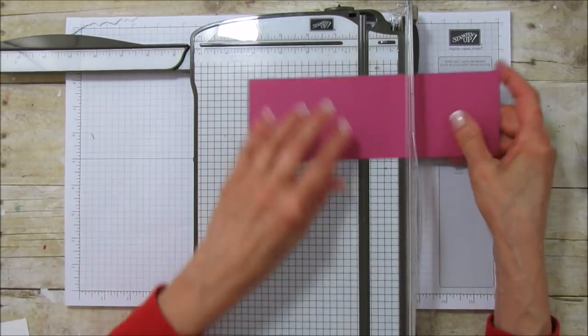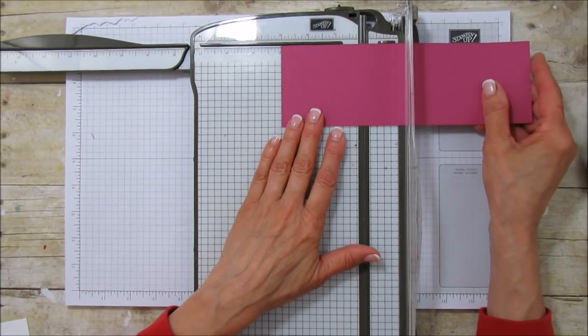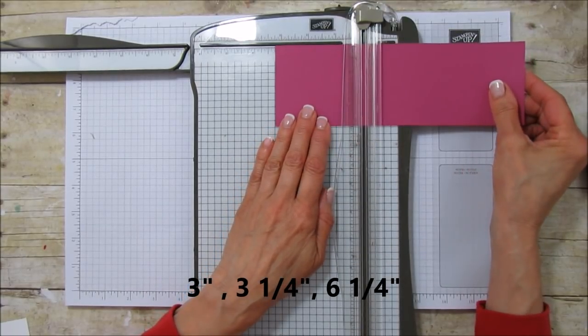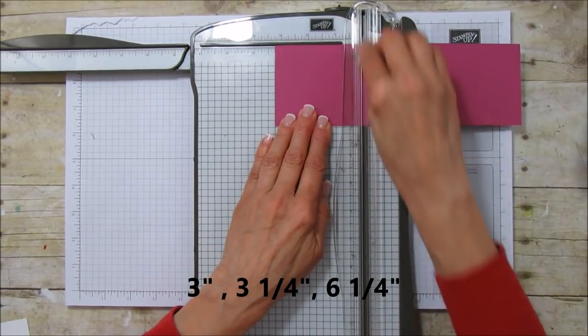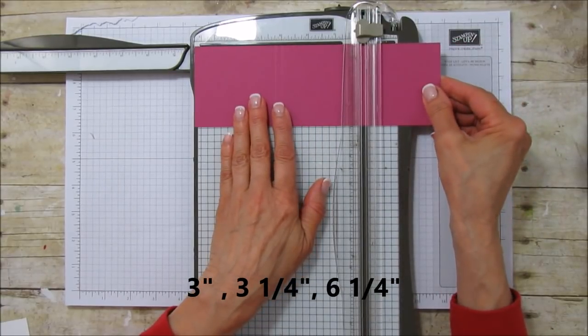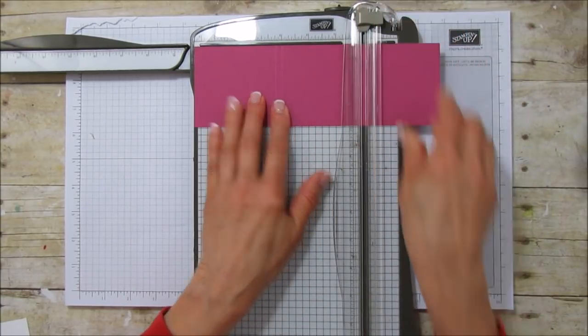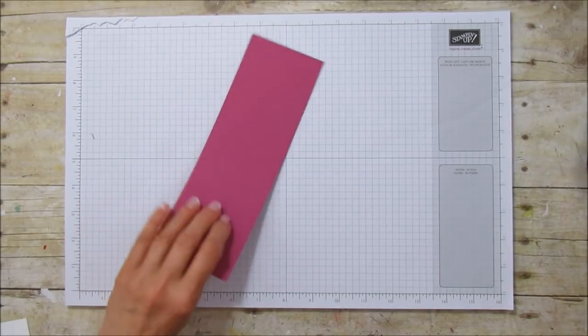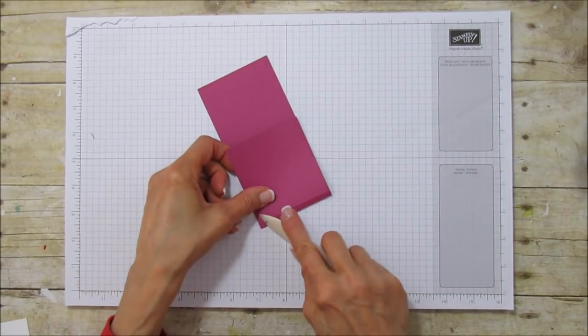So you're going to score it at three, at three and a quarter, and at six and a quarter and that is it. So use your bone folder and sharpen your score marks.